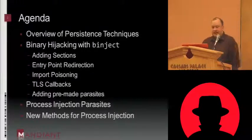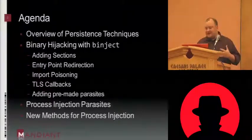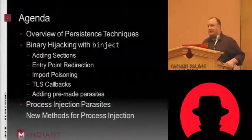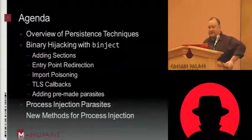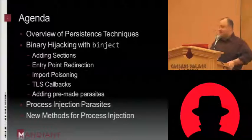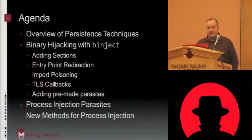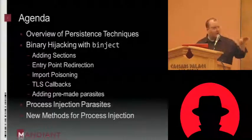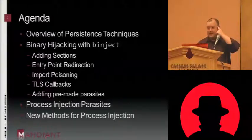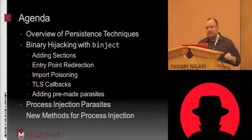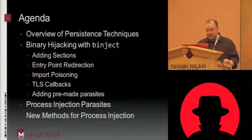First I'm going to talk about an overview of persistence techniques — how malware stays persistent, or how a pen tester would get something to be persistent on a network. I'll talk about the Binject tool, which is my approach to automating persistence through binary hijacking specifically. I'll go through some of the major techniques it supports. It actually supports quite a few other things I'm not going to talk about, but you can download it and run the tool with the dash-H option to see the other things it supports.